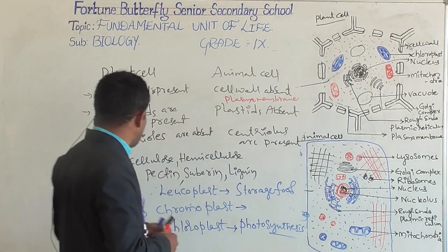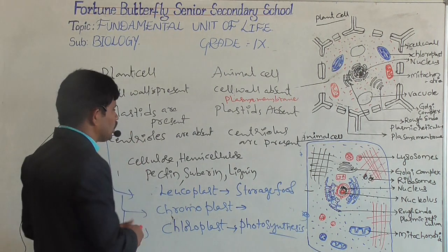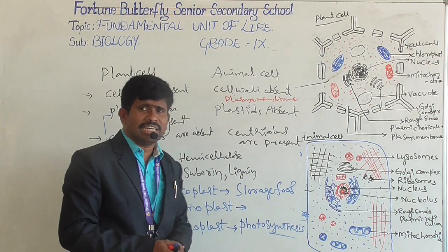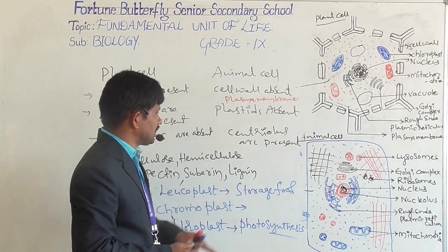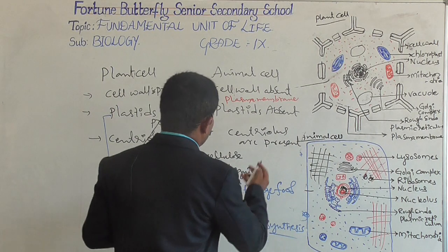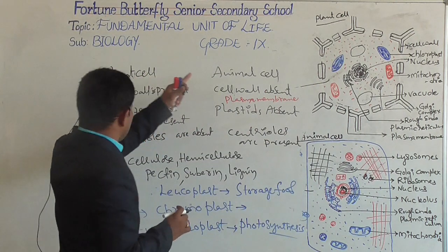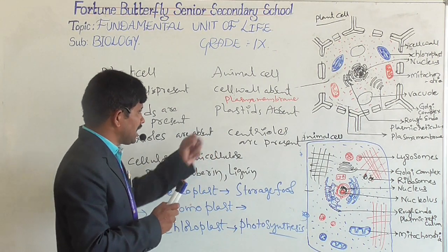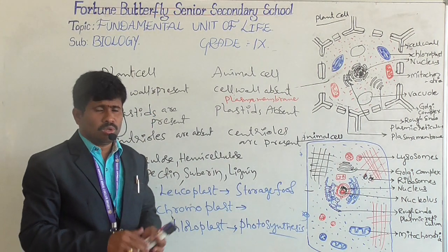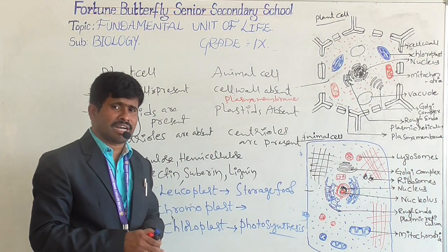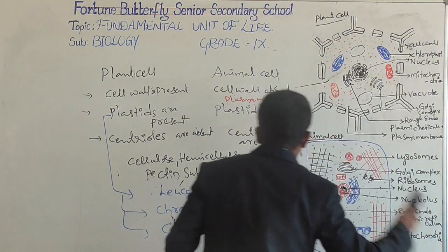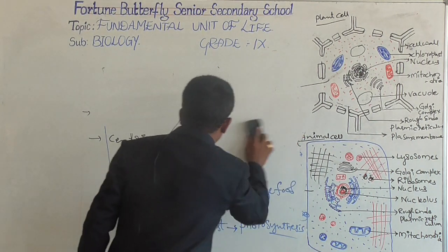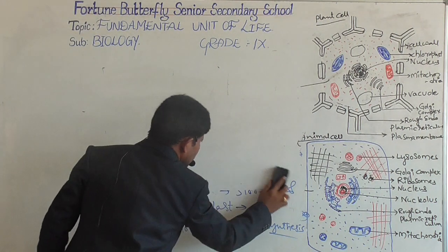Another difference is centrioles. Centrioles are absent in plant cells but present in animal cells. In animal cells, centrioles form centrosomes and play a major role in the formation of daughter cells during mitotic and meiotic division. Inside the cell there are different cell organelles present.